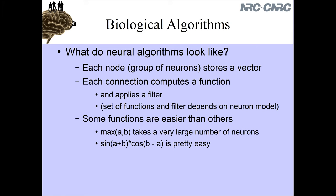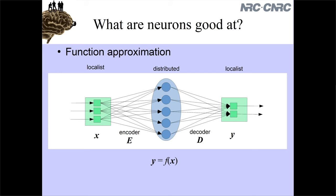That's a summary of the previous session. We introduced some graphs saying that neurons are good at this function approximation idea. What we're going to be thinking of as a group of neurons is the blue things in the middle - those are the actual neurons. The encoder and decoder idea we introduced is a mathematical abstraction we're using to build our model, but encoders and decoders don't technically exist in the brain anywhere. They're going to disappear when we turn it into a biological model.